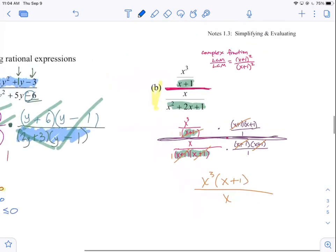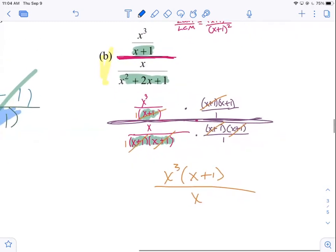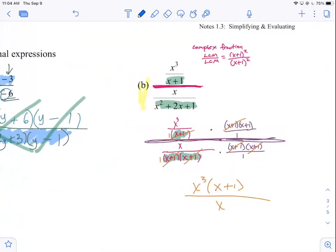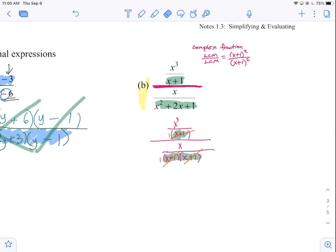All right. So let's get back to letter B. Did we finish letter B in here yesterday? No. We were about to finish. Yeah, I'm going to just go through it again to recap. All right. We have a complex fraction. It's a fraction over a fraction. We have a numerator, and we have a denominator.